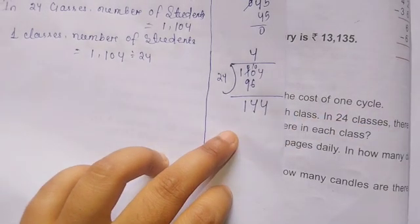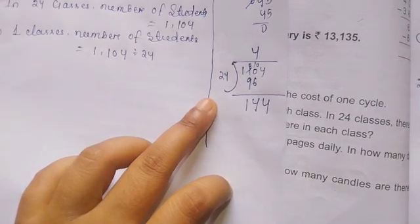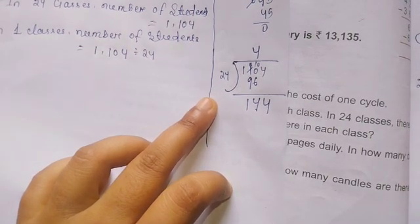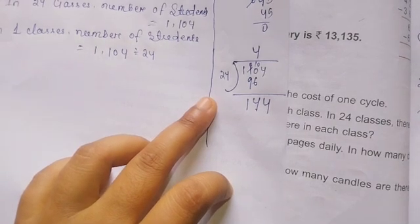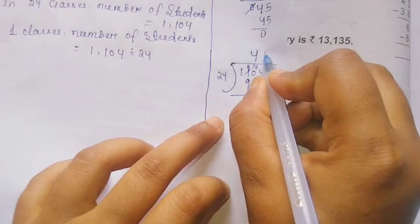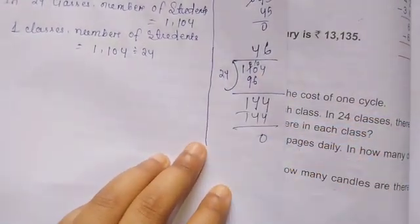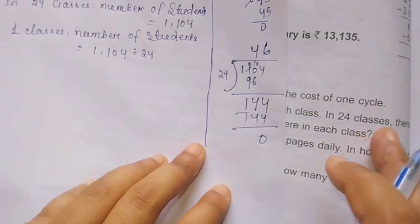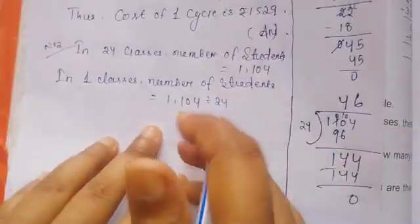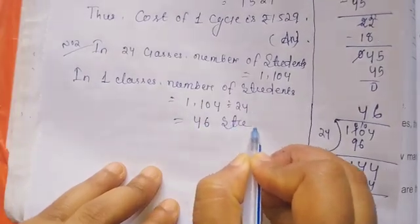Now the number is 144. Then 24 times 6: 6 times 4 is 24, 6 times 2 is 12 plus 2 equals 14. 24 times 6 is 144. So 1,104 divided by 24 equals 46 students.